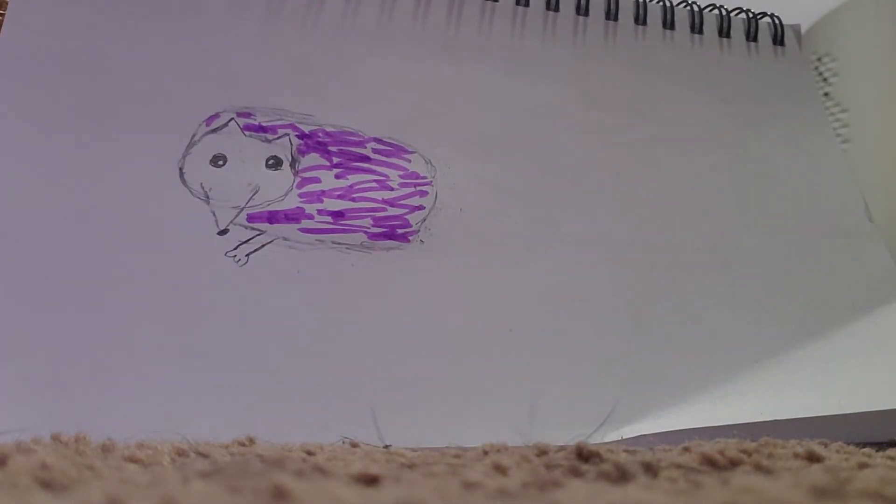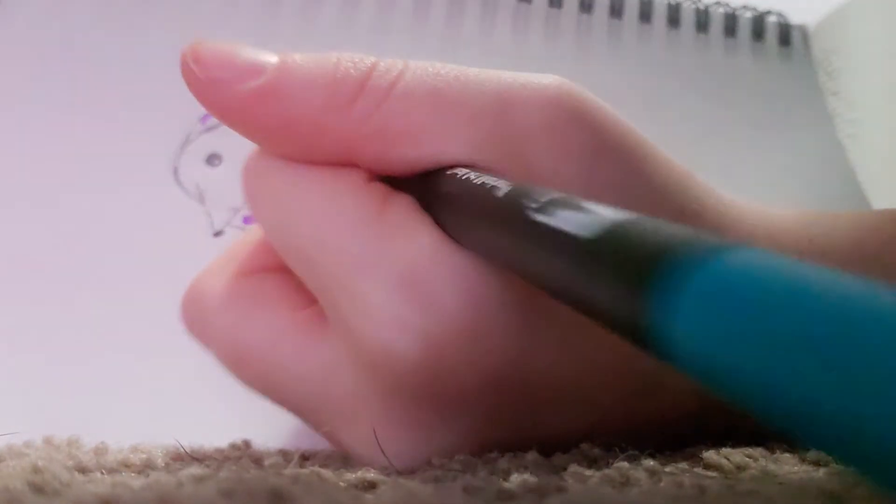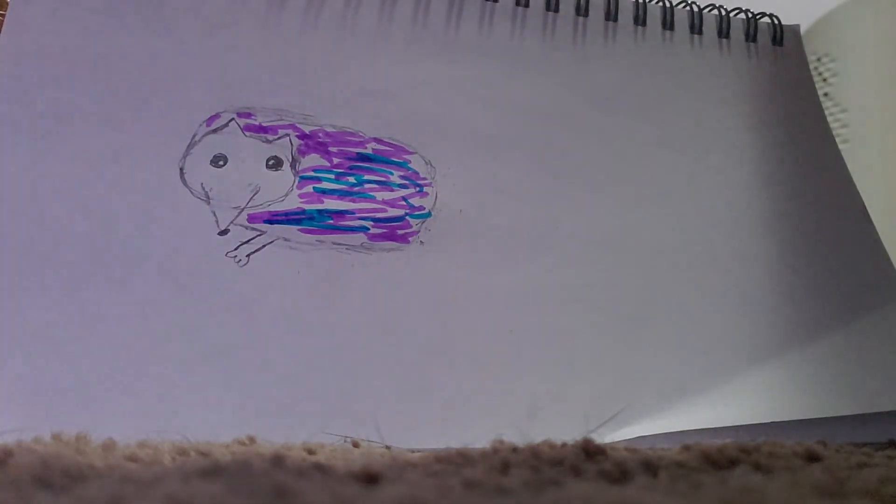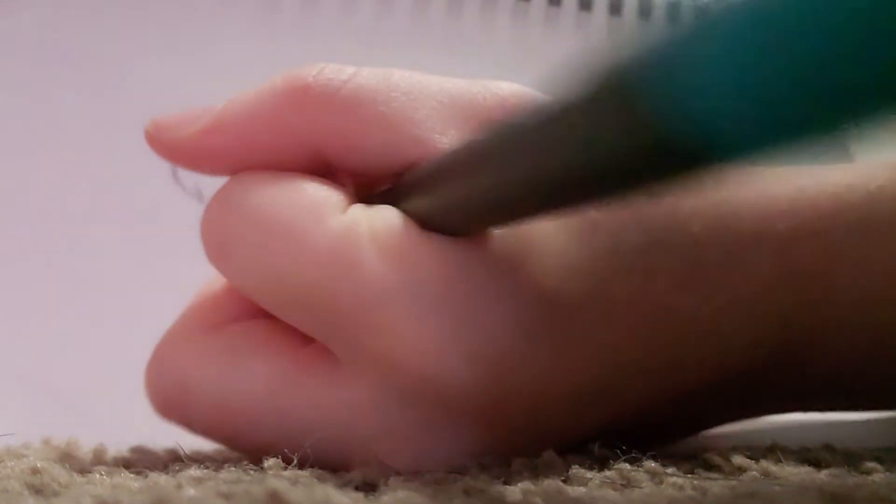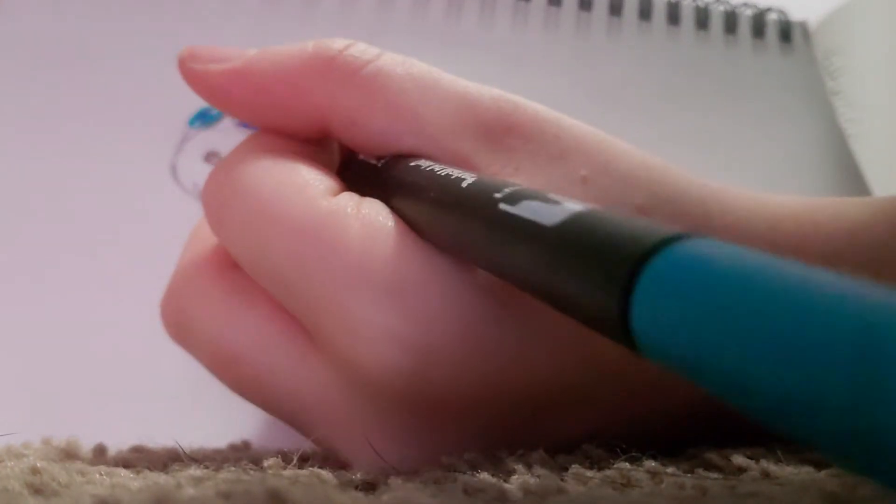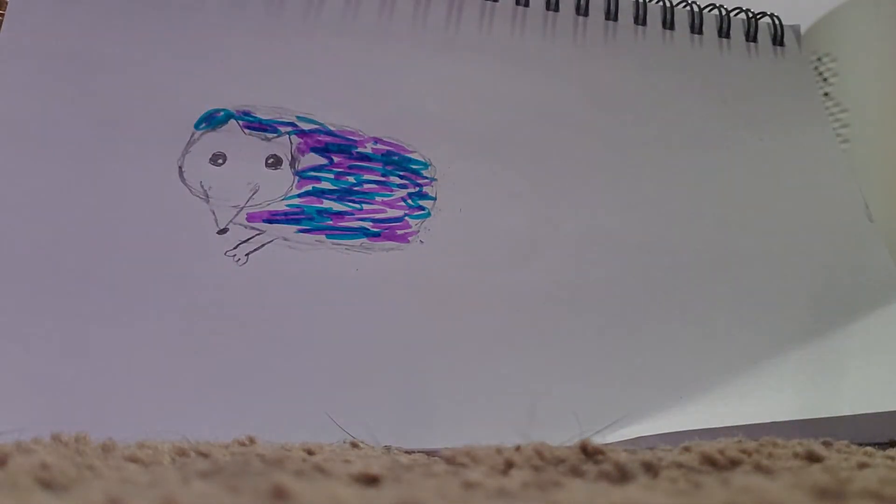There's my hedgehog so far. Isn't he cute? Now what you're going to do is take a different color and scatter those quills on top. You don't want to put too many purple quills before we put the other colors, because then it will look like the other colors are just black if we layer it too much. There we have him so far.